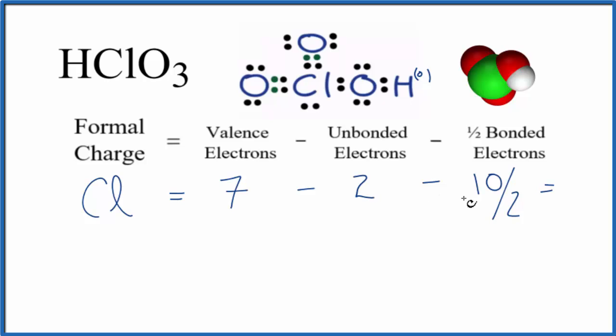Seven minus two minus five, that's zero. So the formal charge on the chlorine here in the center, that's going to be zero.